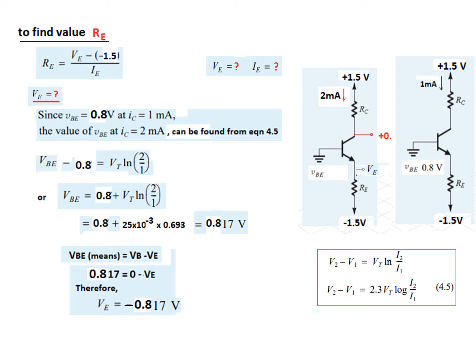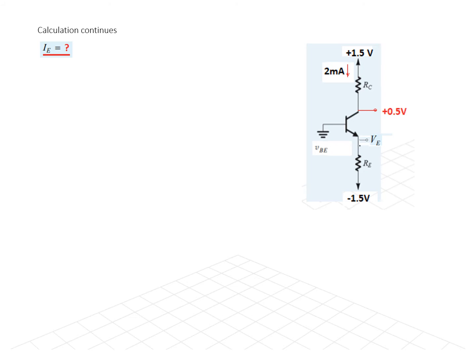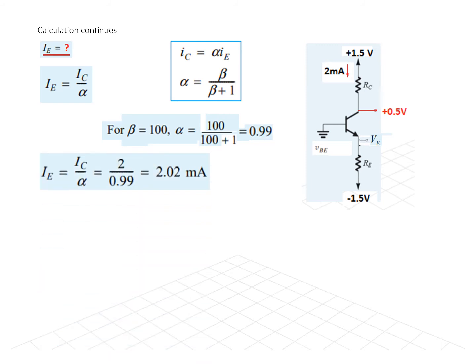Now, we can find IE from the current relations that we have known. IC is equal to alpha into IE. So, from here, we can find IE if we know alpha. And alpha is beta divided by beta plus 1. So, IE is IC over alpha from here. And alpha from here, we can find for beta is equal to 100. Alpha is 100 divided by 100 plus 1 is equal to 0.99. So, plugging in the two values, IC 2 milliampere from here, alpha 0.99. Therefore, IE is 2.02 milliampere.